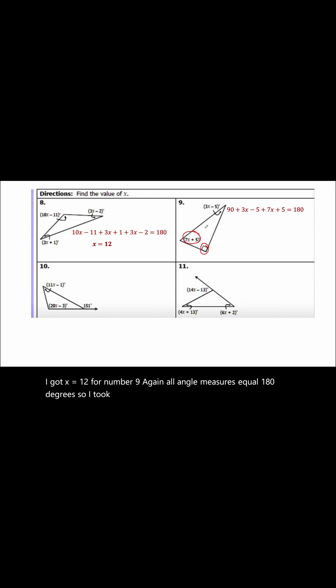I took 90 degrees plus 7x plus 5 plus 3x minus 5, and when I solved for x I got x equals 9. For number 10, I know that the two opposite interior angles equal the exterior angle, so when...